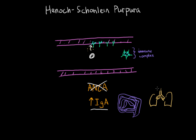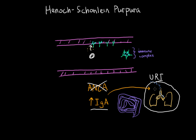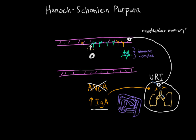Henoch-Schönlein purpura is associated with upper respiratory infections. It's believed that a pathogen gets into the respiratory tract, causes an infection, and triggers release of IgA to combat it. However, these pathogens share similar components that look like the wall of blood vessels — a similarity called molecular mimicry. It's believed that antibodies released in response to the infection also accidentally attach onto blood vessel walls, forming immune complexes. This molecular mimicry is really the cause of the disease process.